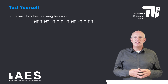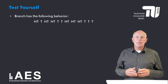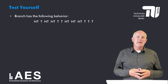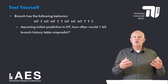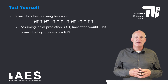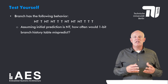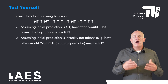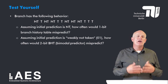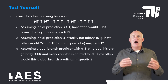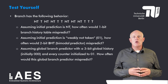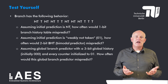Here is an exercise to test yourself. Suppose a particular branch has the following behavior: not taken, then taken, then not taken twice, then taken twice, then not taken three times, then taken three times. Assume the initial prediction is not taken. How often would a 1-bit branch history table mispredict? Assume no conflicts between branches. Similarly, how often would the bimodal predictor mispredict, assuming the initial prediction is weakly not taken (state '01')? Finally, how often would a global predictor with a 3-bit global history mispredict, assuming the global history is initialized to '000' and every counter initialized to '01'?